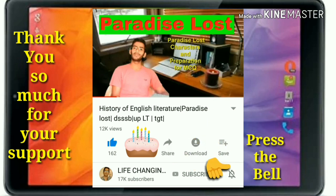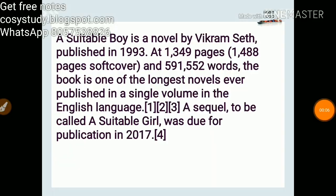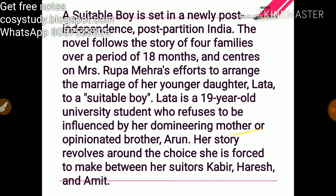A Suitable Boy is a novel by Vikram Seth, published in 1993. There are a lot of details here, so let's start the story. A Suitable Boy is set in a newly post-independence, post-partition India.